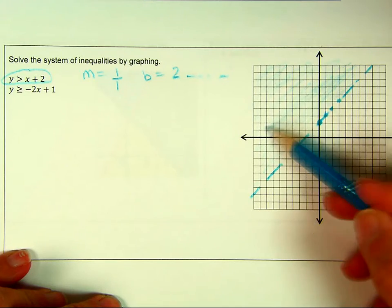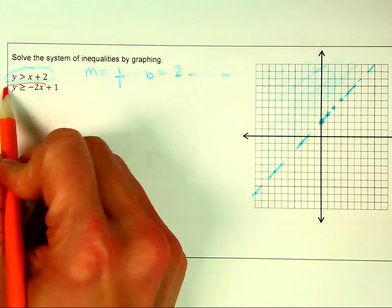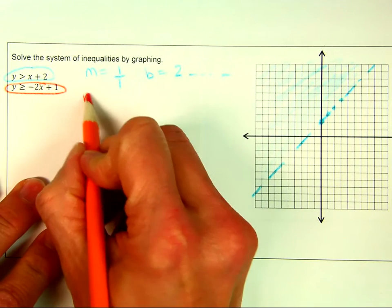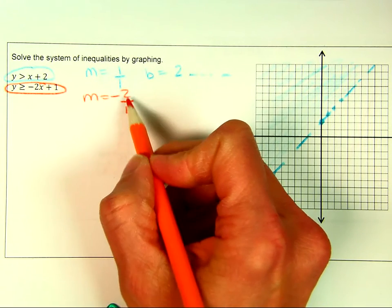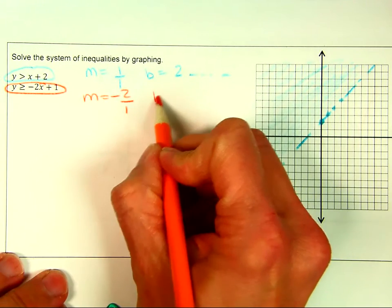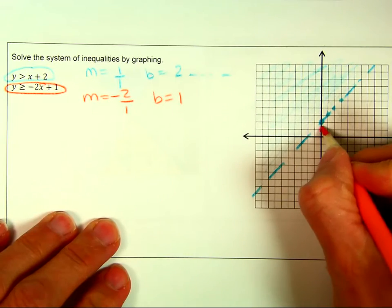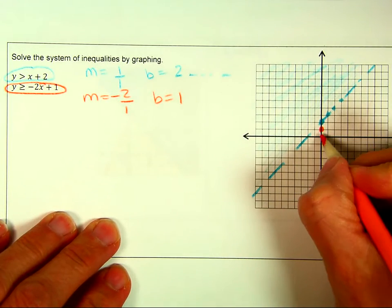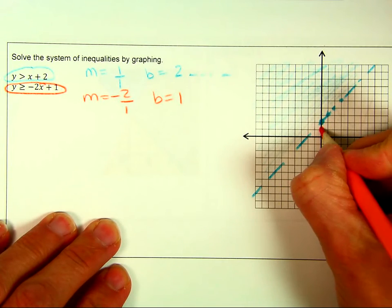Greater than means shade above the line. Now I'm going to come in and do my second line in orange. My y-intercept is 1 and my slope is negative 2 over 1, meaning I go down 2 and right 1 to find my points. Notice the slope is going down from left to right, which means it's negative. You can also go up 2 and left 1 to get the same negative slope.